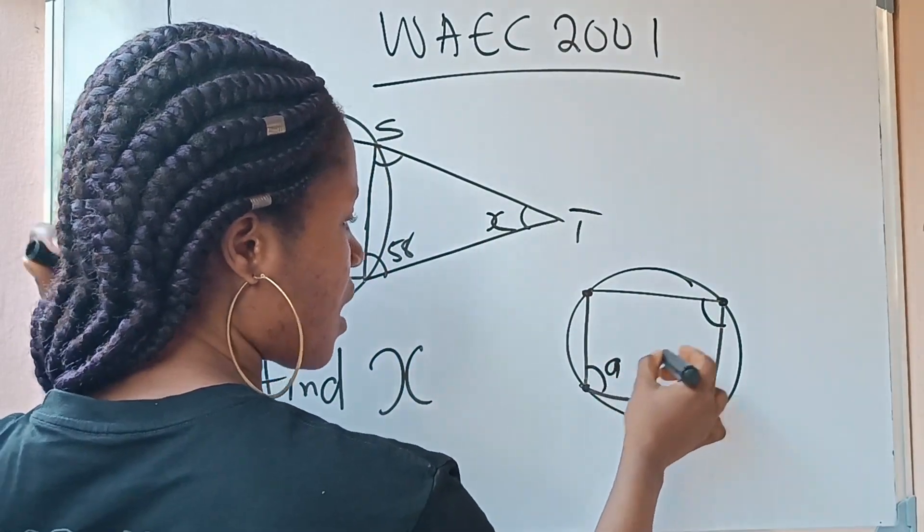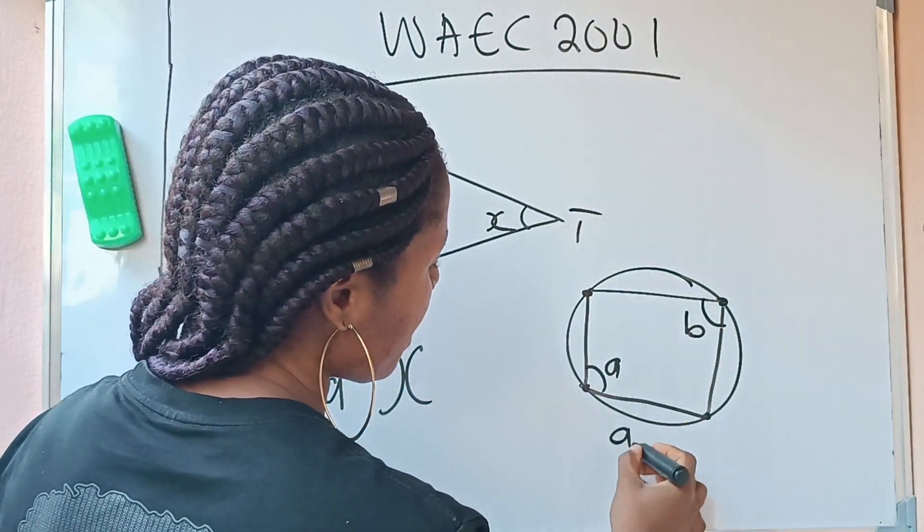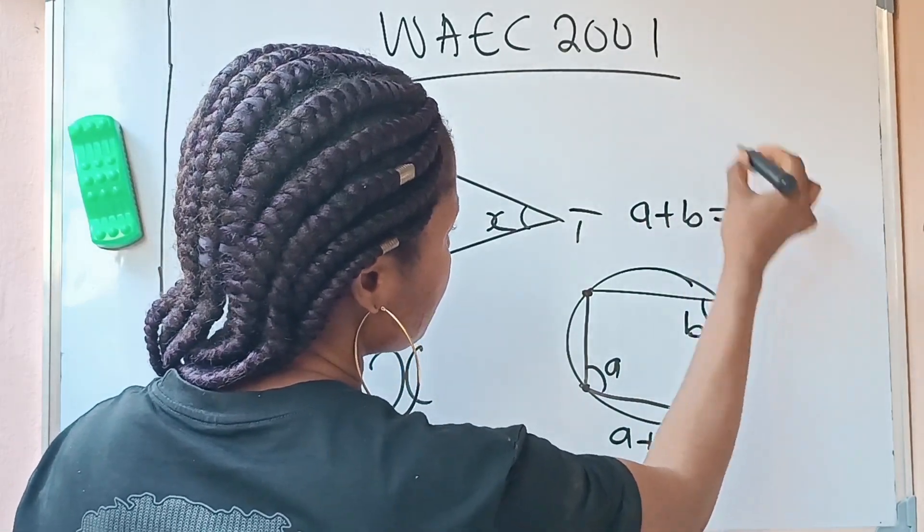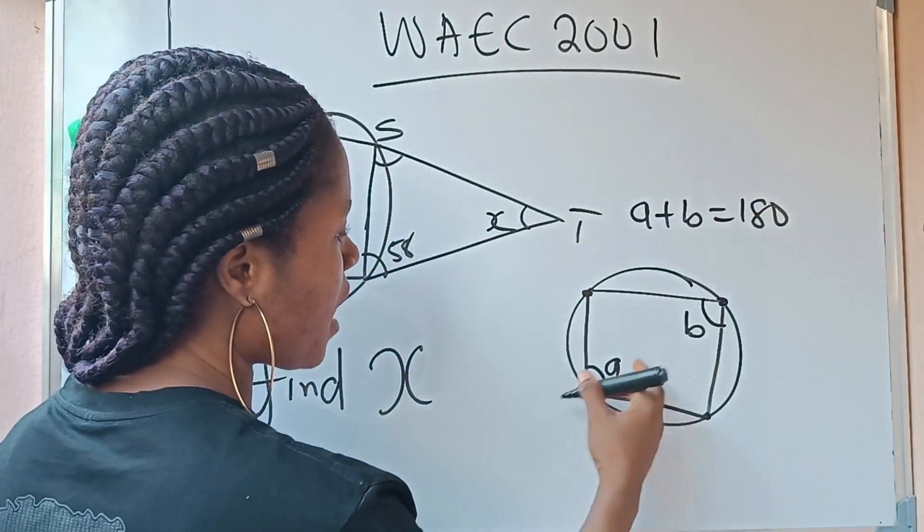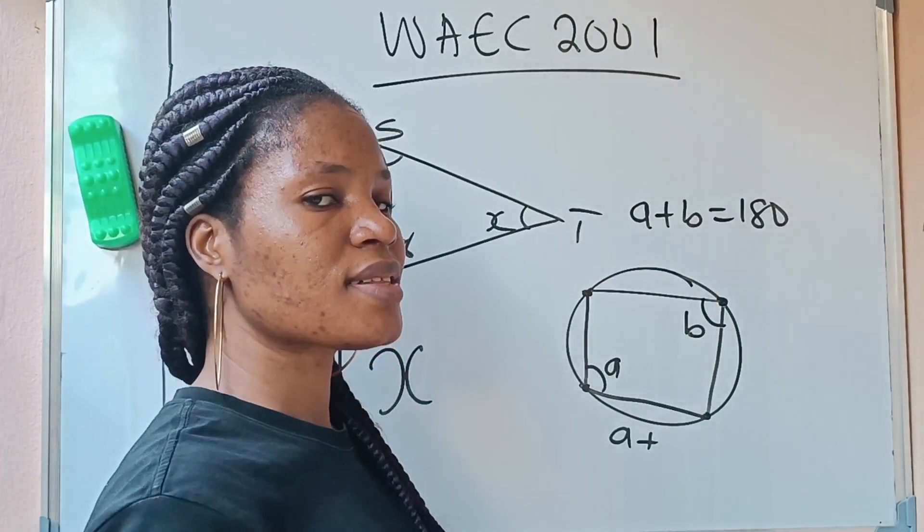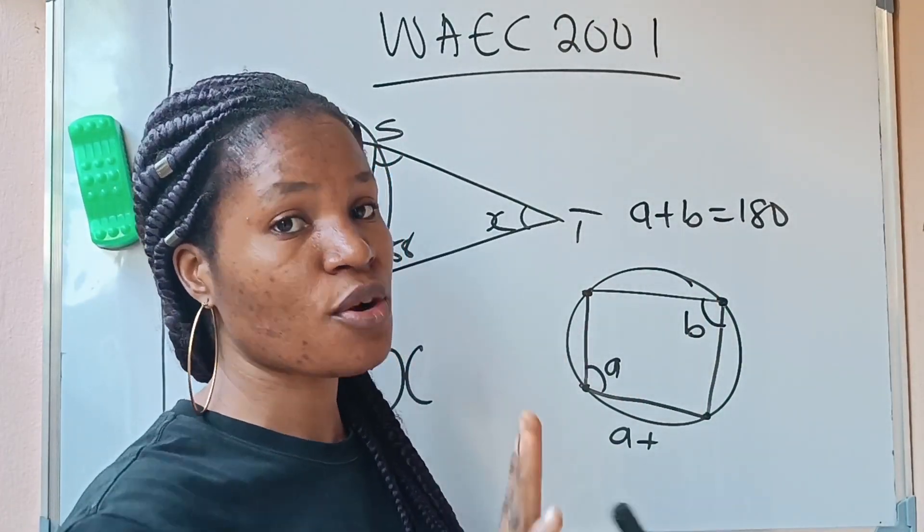So it means that if this is A and this is B, that A plus B is 180 degrees. So if this is A and this is B, that A plus B will give us 180 degrees. That is the first theorem.